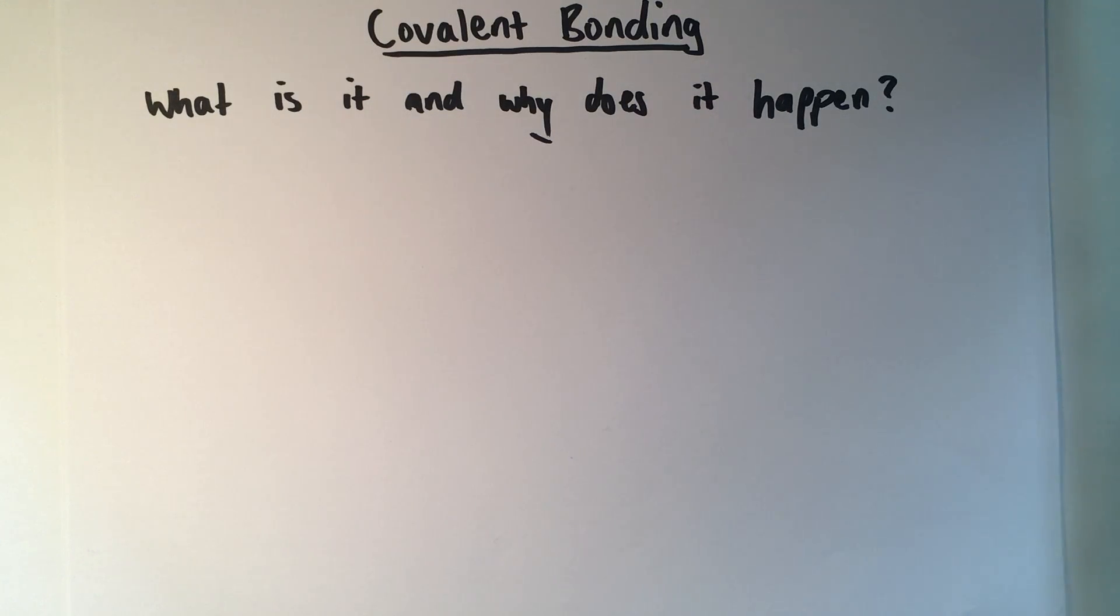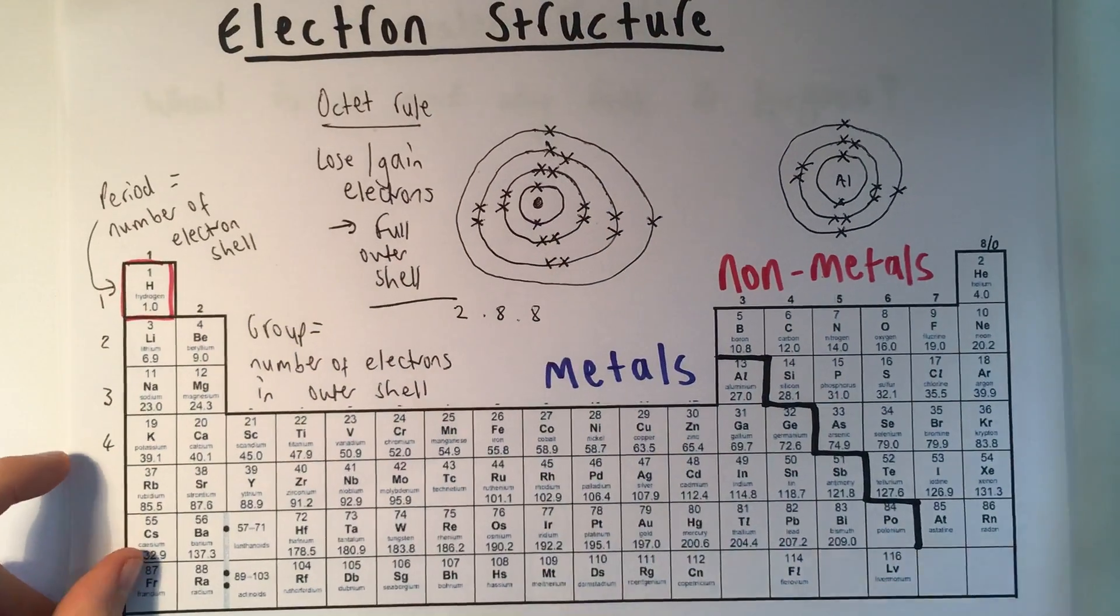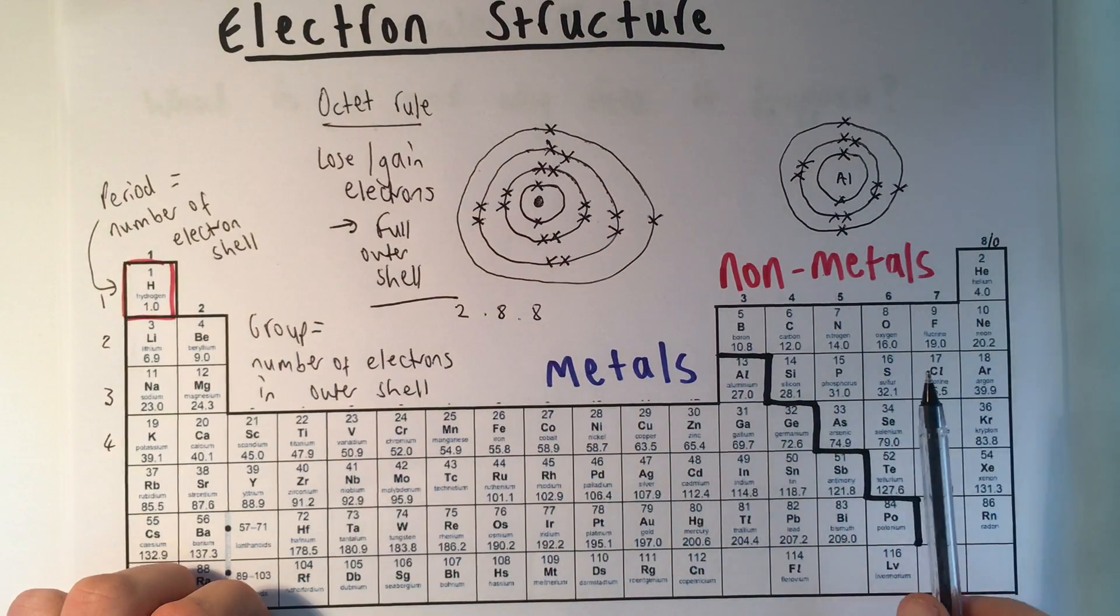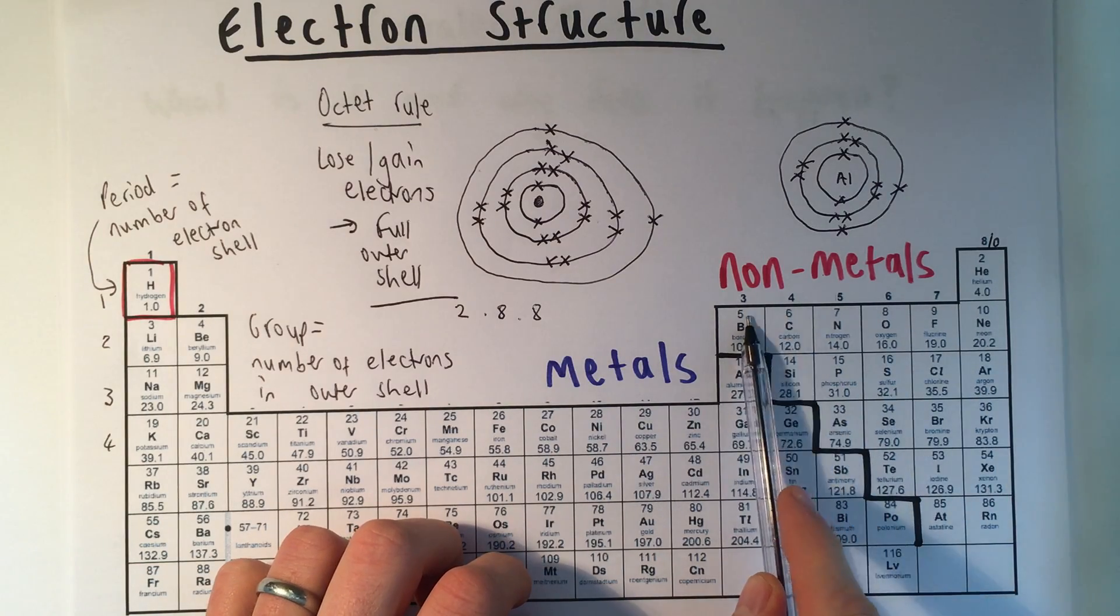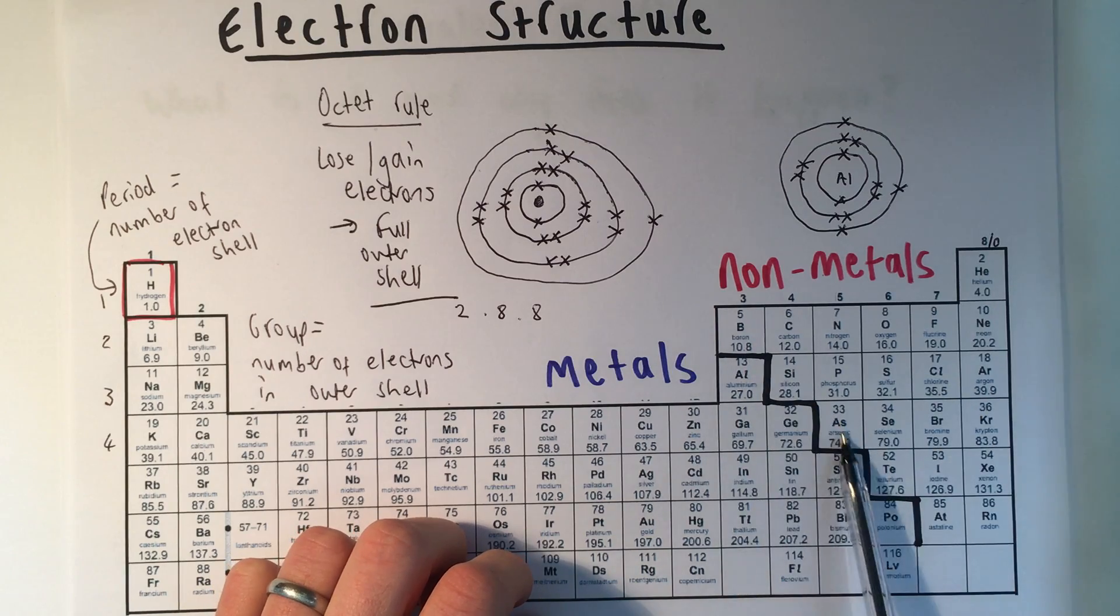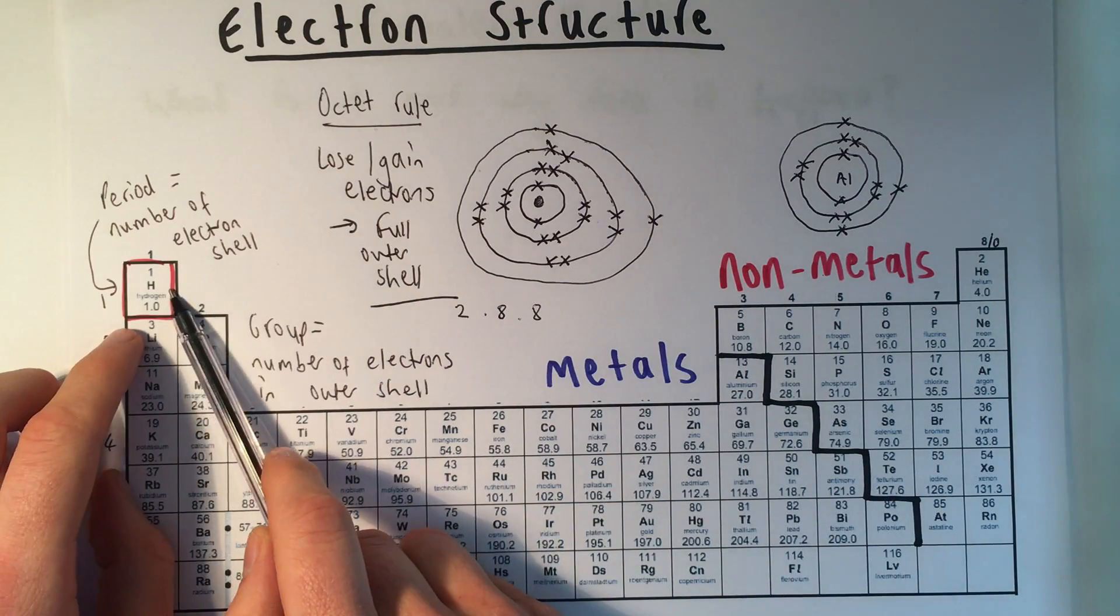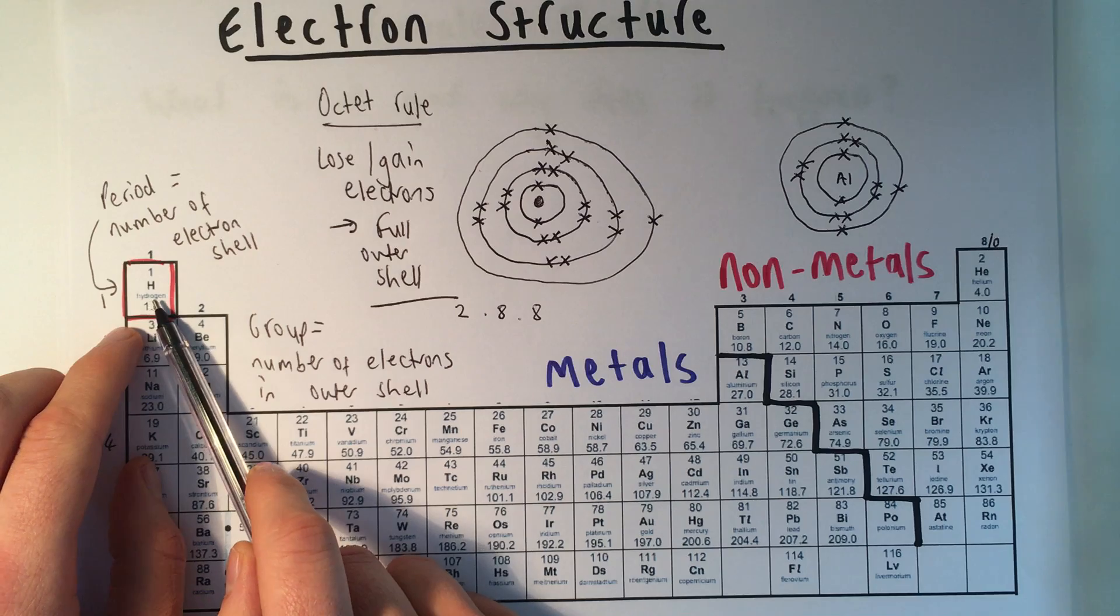This video is to introduce covalent bonding. Covalent bonding is the type of bonding that you get in non-metal elements and compounds that are made of just non-metals. On the periodic table, non-metals are everything that's on the right-hand side of that staircase divide, and hydrogen, which is in period one, is sometimes shown on the metal side.